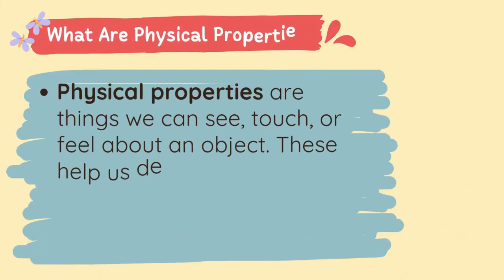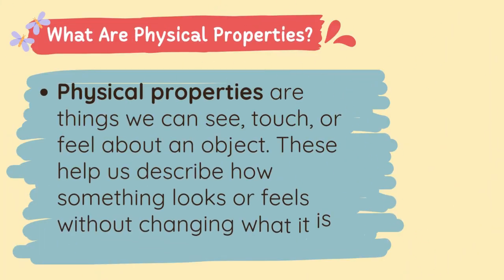What are Physical Properties? Physical Properties are things we can see, touch, or feel about an object. These help us describe how something looks or feels without changing what it is.